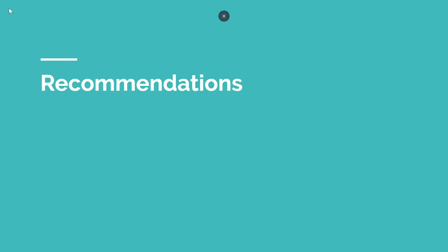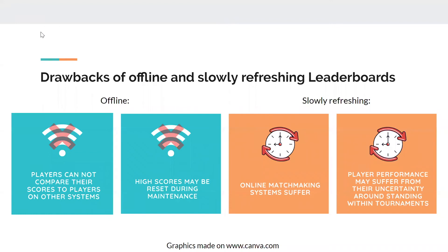Moving on to recommendations for companies considering implementing an AWS leaderboard: two previously popular formats were offline leaderboards and daily leaderboards. The drawback of offline leaderboards is that players cannot compare their scores to players on other systems and high scores may be reset during maintenance. For slowly refreshing or daily leaderboards, online matchmaking will suffer from inaccurate scores and player performance may suffer from poor matchmaking.